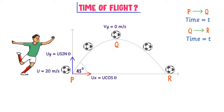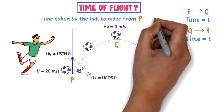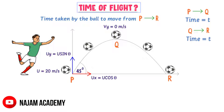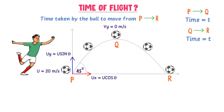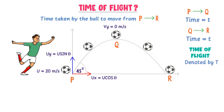What is the time of flight? The time taken by the ball to move from P to R is called the time of flight of a projectile. The time of flight of a projectile is denoted by capital T.